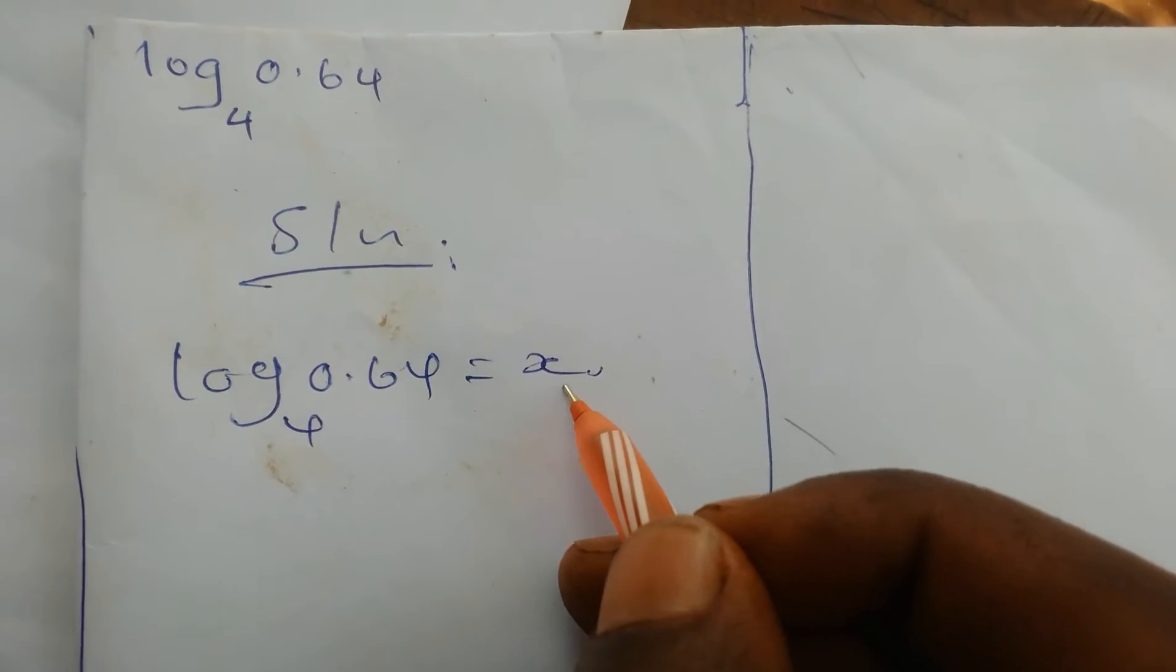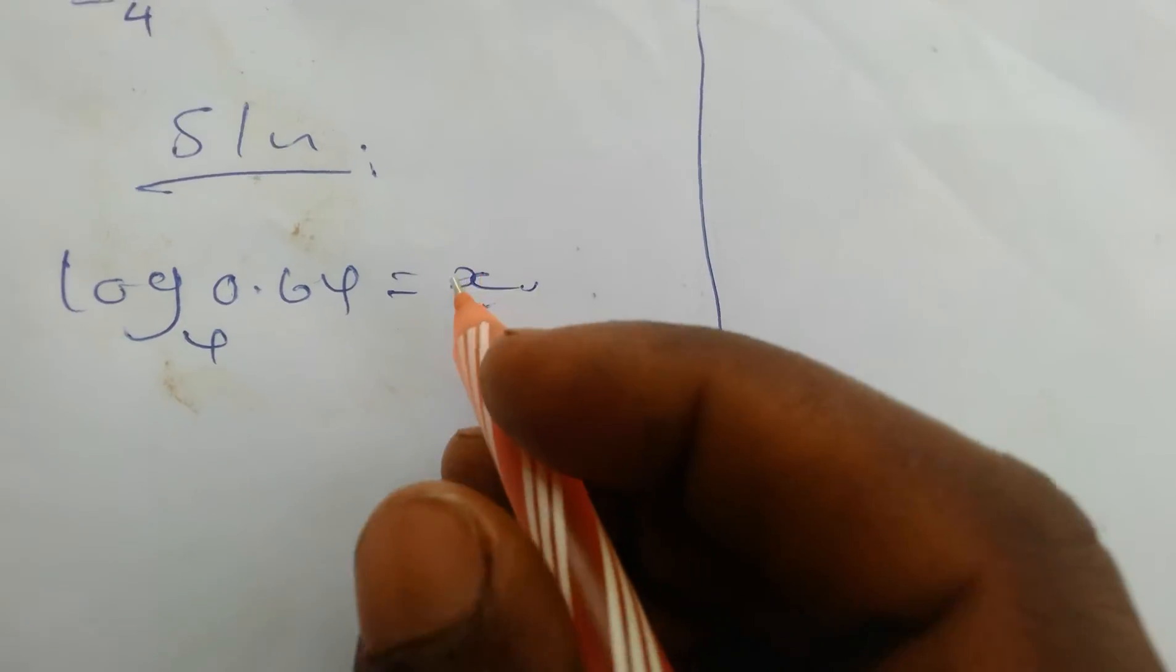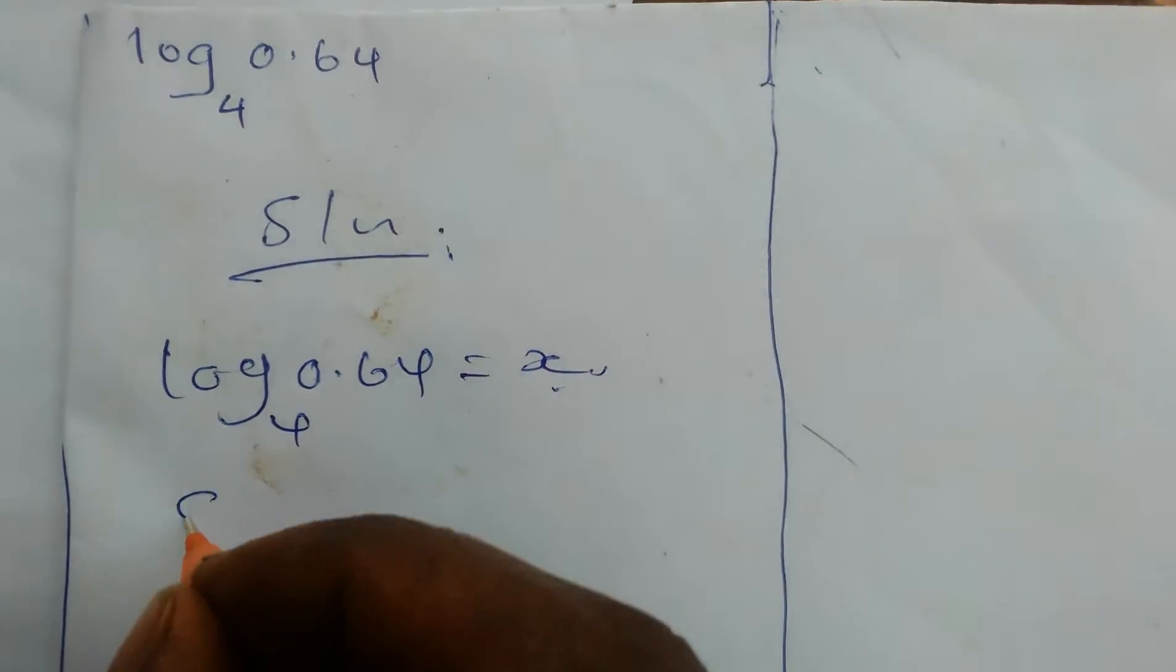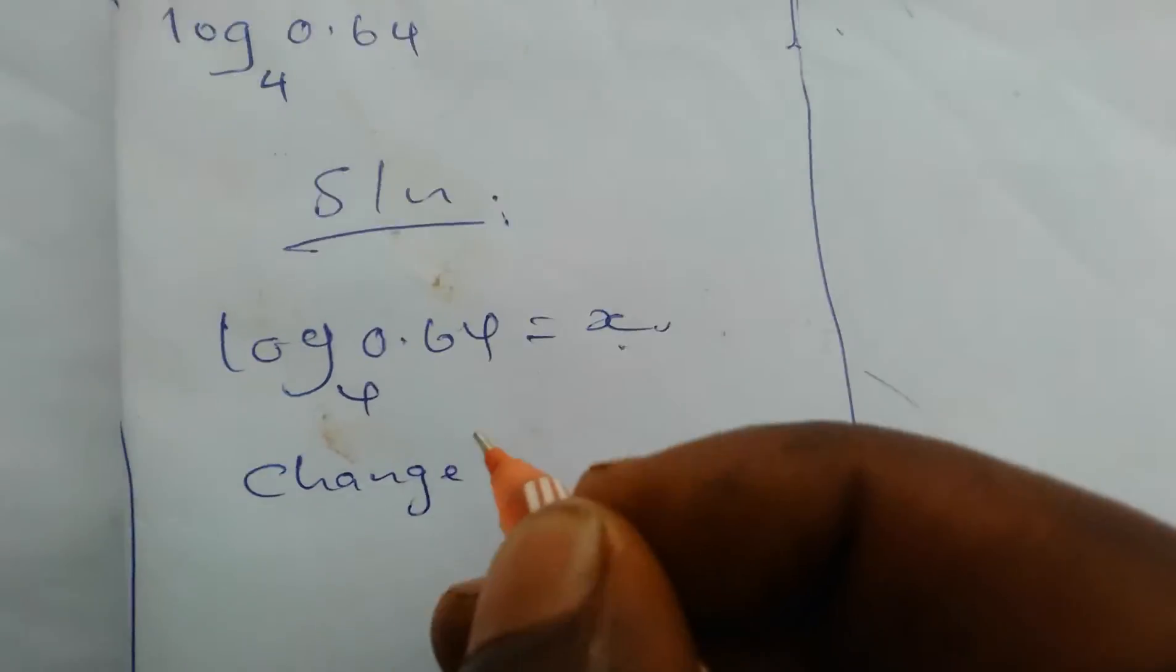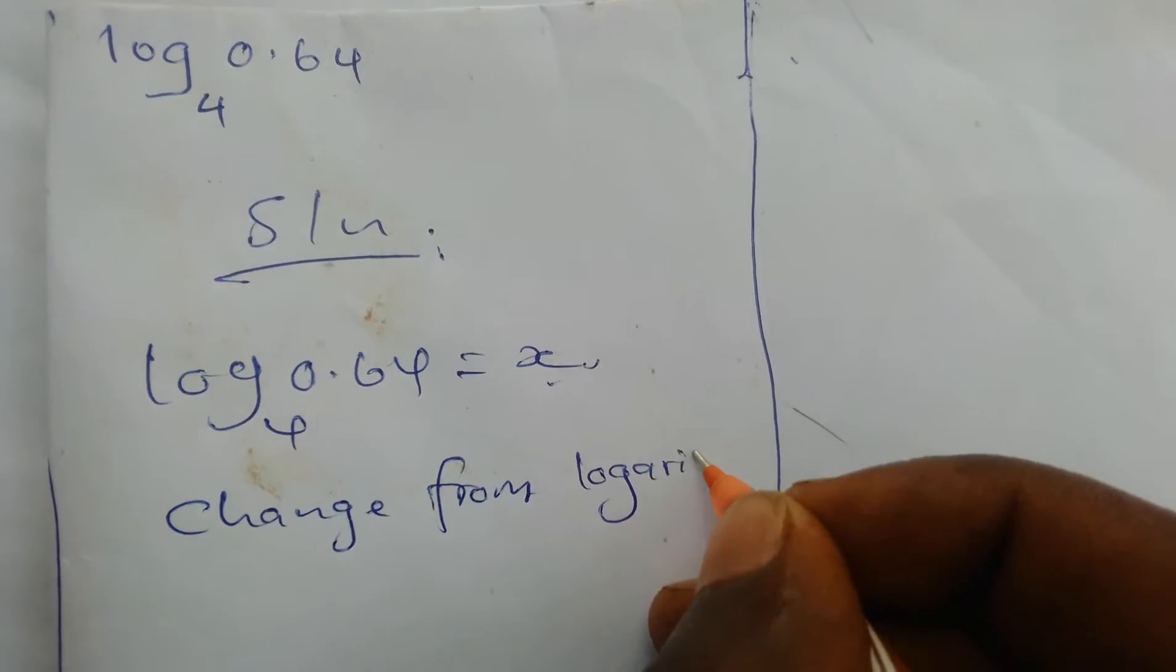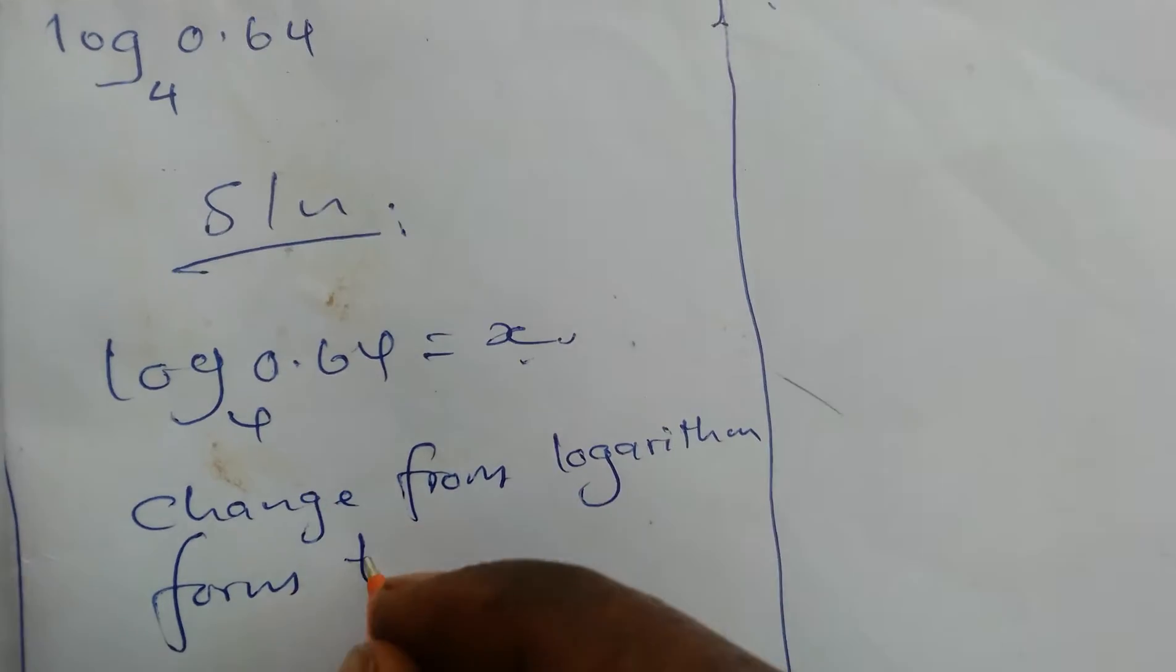After equating it to x, it becomes an equation. The next step is to change from logarithm form to index form.